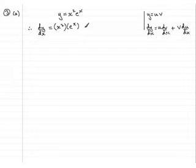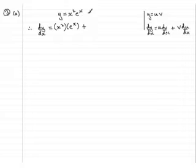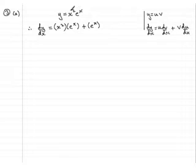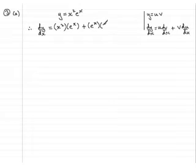Then we have plus, and then we have v which is e to the x — put that in brackets — and then multiply it by the differential of the u part with respect to x. The differential of x squared is 2x.